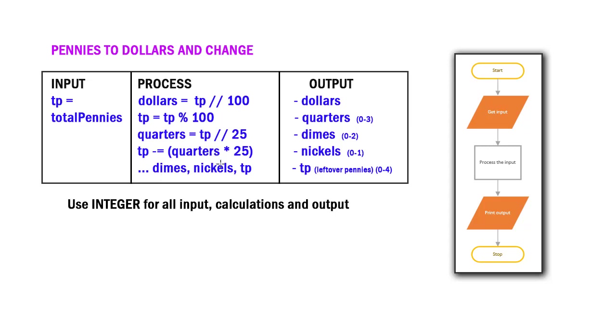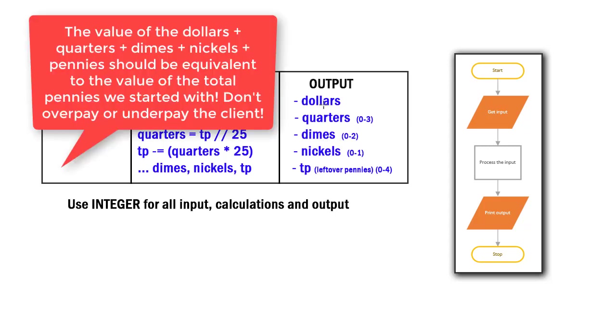Then do the same things for the dimes and nickels and total pennies. Our output is going to be the dollars, the quarters. Again there should be zero to three. Dimes, zero to two. Nickels, zero to one. And total pennies should never be more than four. If we had five pennies left over, it should have been a nickel. If you had three dimes, that should have been a quarter and a nickel. So we're going to get the maximum amount of dollars, the maximum amount of quarters and the remaining maximum dimes, maximum nickels, maximum total pennies.